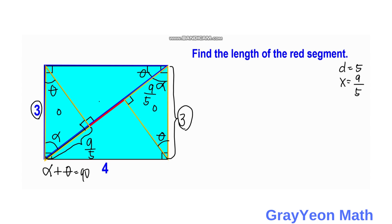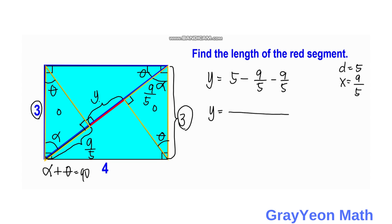Now for the final step, we find the length of the red segment Y. The red segment equals the full diagonal minus the two congruent lengths from the two smaller orange triangles. So Y equals 5 minus 9 over 5 minus 9 over 5. With LCD of 5, this gives us 25 over 5 minus 9 minus 9, which equals 25 minus 18, which is 7. So Y equals 7 over 5 units. That is our answer.